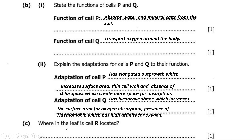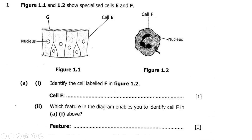Part C asks where in the leaf the palisade cell is located. The palisade cell is found in the upper part of the leaf, where it carries out photosynthesis.